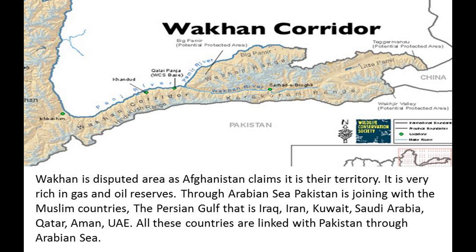The Arabian Sea marks Pakistan's south front border, and to the east it has a common border with India. Through the Arabian Sea, Pakistan is connected with Muslim countries of the Persian Gulf — Iraq, Iran, Kuwait, Saudi Arabia, Qatar, Oman, and UAE — all these countries are linked with Pakistan through the Arabian Sea.